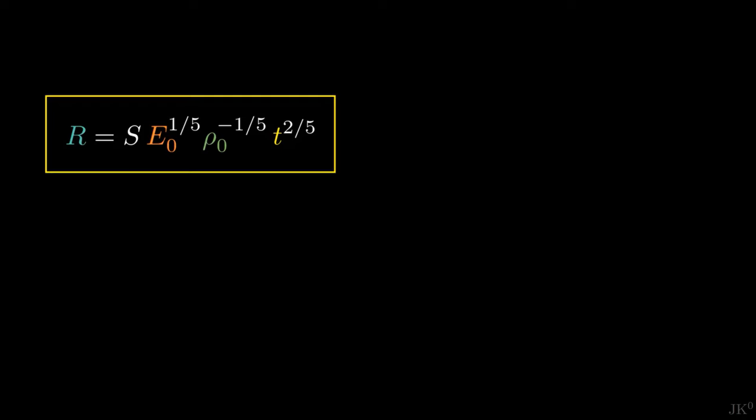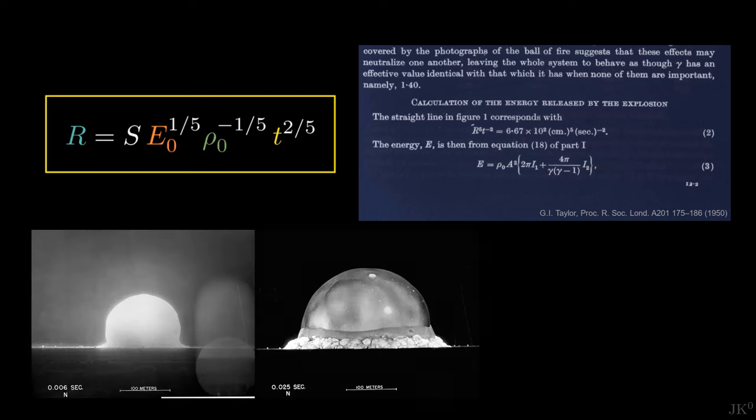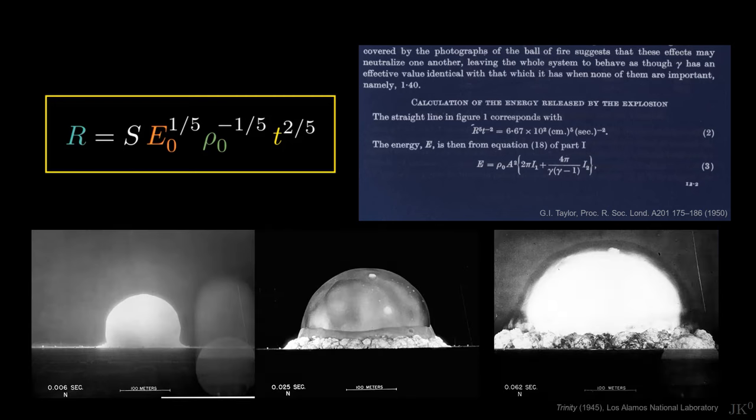The story goes that armed with his formula, G.I. Taylor was able to determine the blast energy of the first nuclear bomb only using some photographs. This story has been told many times, but they always skipped a part of how Taylor did it. In this video, I will show you step by step how Taylor used his formula to determine the blast energy of the Trinity test.